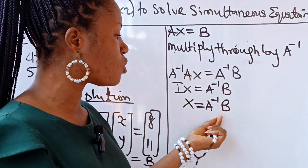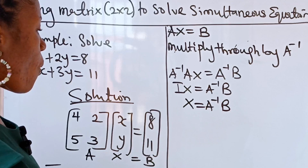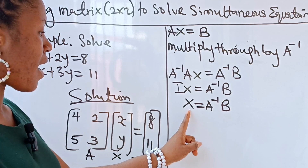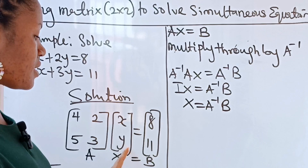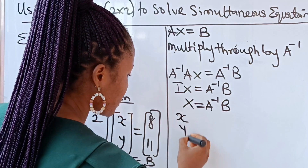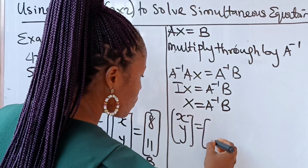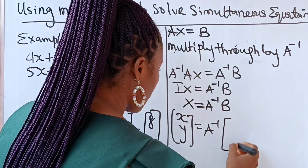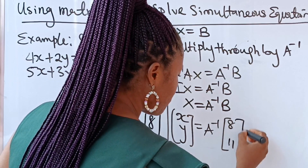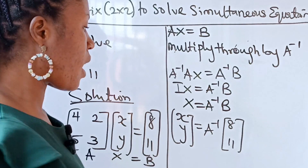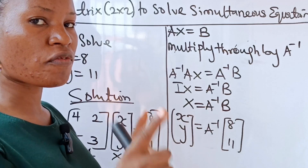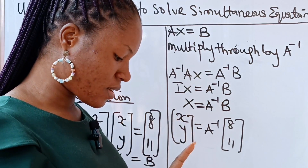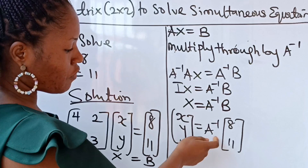Bringing back our variables, X and Y equal A⁻¹ times B, where B is [8; 11]. To find A⁻¹, we use the formula: A⁻¹ equals the adjoint of A divided by the determinant of A.